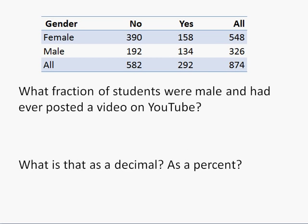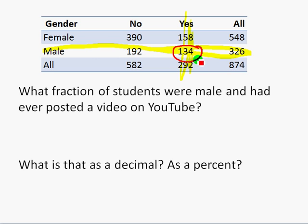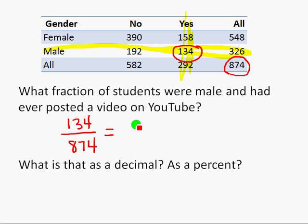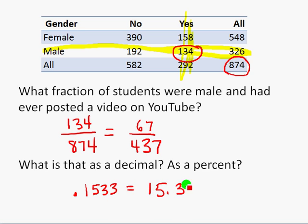What fraction of students are male and had ever posted a video on YouTube? We're looking at two things: the male row and the yes column. We need to see where that row and column intersect — that gives us 134 people who were male and had posted a video on YouTube out of 874. So the fraction is 134 out of 874, or 67 out of 437. As a decimal, rounding that off, we get .1533, or 15.33%.